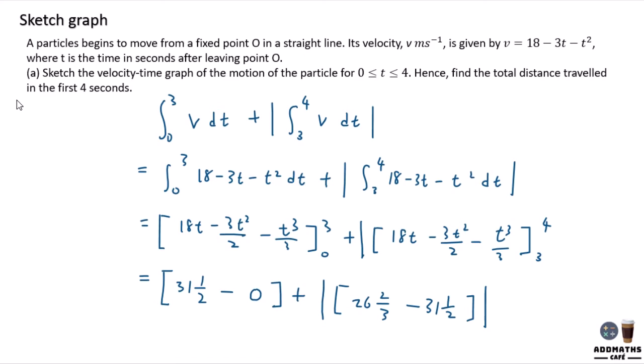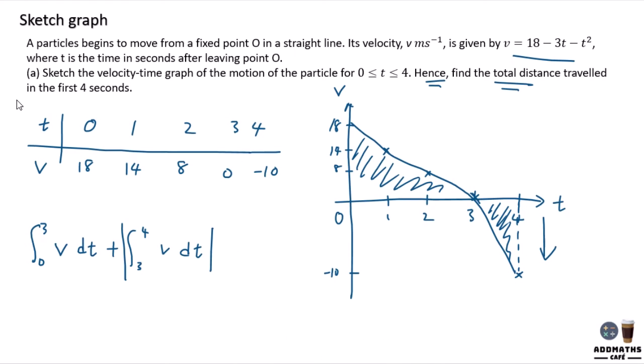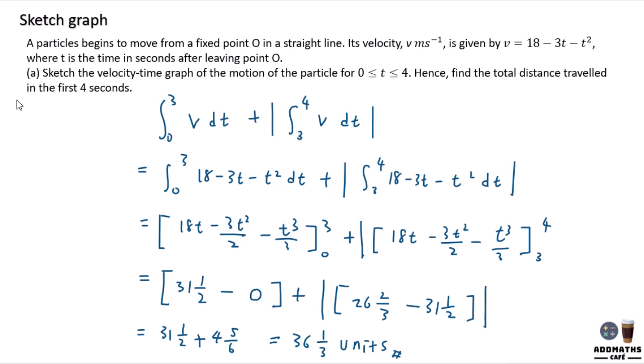So by the first part, you will have 31 1/2 plus modulus of this negative answer will give you 4 5/6. And the final answer will give you 36 1/3. This is your total distance. So after sketching the graph, you can actually see the graph area here to find the total distance.